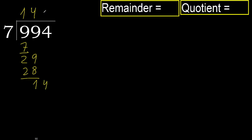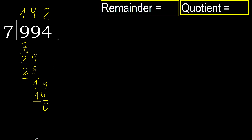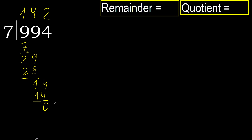Next, 14. 7 multiplied by 3 is 21, which is greater. Multiply by 2: 14 is not greater. Subtract: 14 minus 14 is 0. Next, there is no number, therefore finish it.